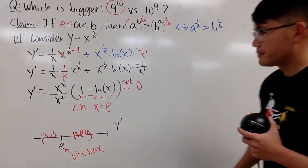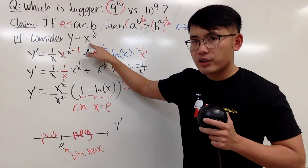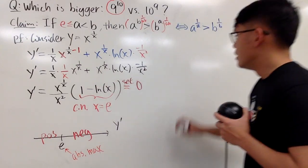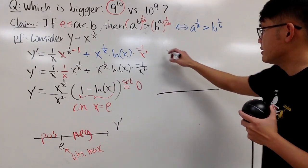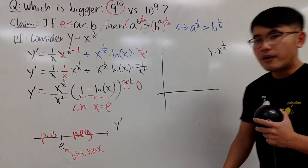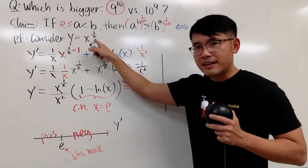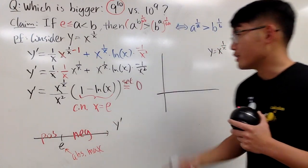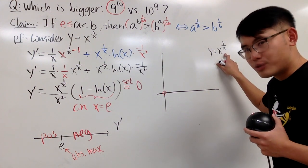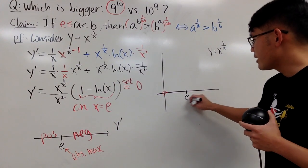So let me just tell you guys, we have an absolute maximum when x is equal to e. So what are we talking about? Remember, when you have the absolute maximum at e, that means if you're putting e in this function, e to the 1 over e, that's going to be the biggest among any other number in this form. So I will actually show you guys the graph right here because that will be the easiest way for me to demonstrate my point.